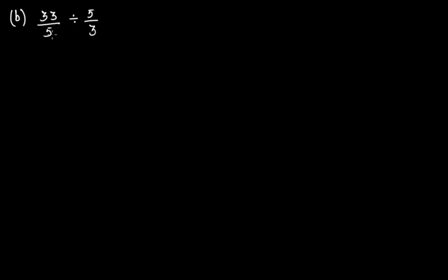Here we have 33/5, and this is being divided by 5/3. This becomes 33/5 times 3/5. You get 99/25. Now, is 99/25 a rational number? You'll say yes, this is a rational number. So again in this case, the division is actually closed. Rational numbers are closed under division.